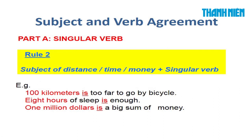Luật thứ hai: Nếu như chủ ngữ chỉ về khái niệm thời gian (time), tiền bạc (money), và khoảng cách (distance), thì động từ sẽ là số ít. Ví dụ: '100km is a subject of distance'; '8 hours of sleep is' — mặc dù 8 tiếng đồng hồ nhưng động từ vẫn là số ít; '1 million dollars is' — 1 triệu đô là khái niệm về money. Các bạn nhớ: subject of distance, time and money dùng singular verb.